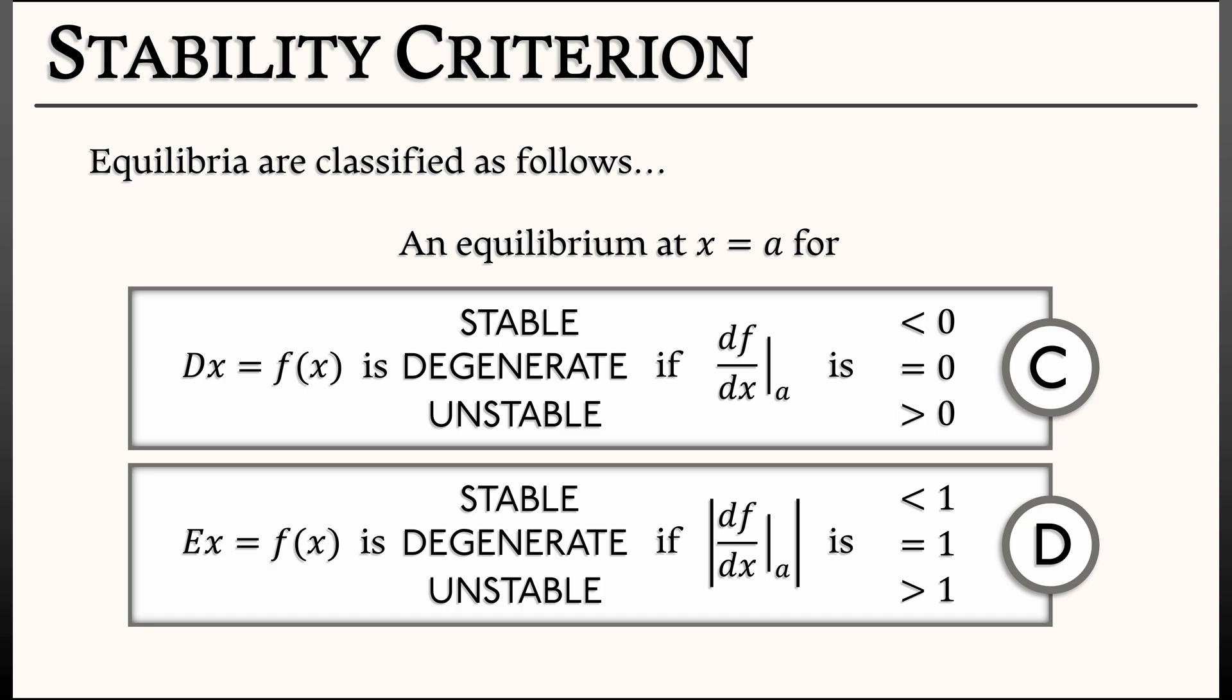A perturbation hn grows like lambda to the n. So if lambda is less than 1 in absolute value, it's shrinking to 0. Stable. If lambda is bigger than 1 in absolute value, then lambda to the n is growing exponentially. Unstable.